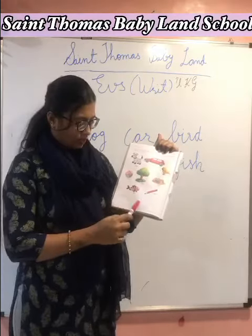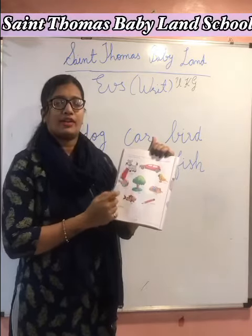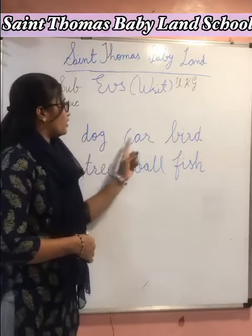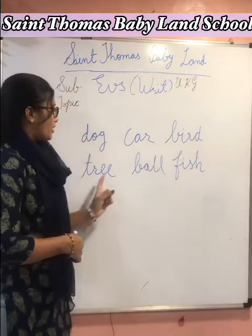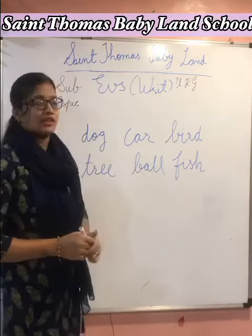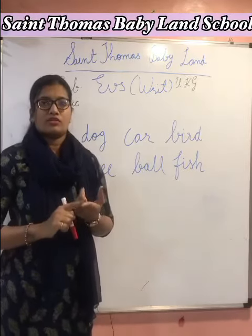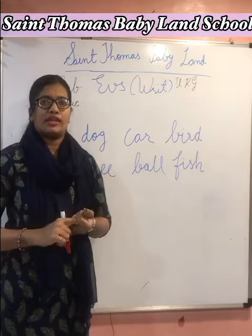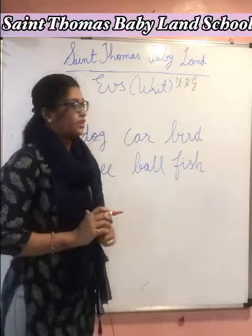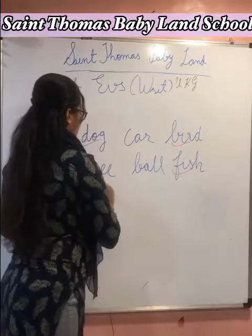Here we have four blanks. In this whole picture, we have to identify the living things. For example, here I wrote some names: dog, car, bird, tree, ball, and fish. So we have to identify the living things. Dog is a living thing — dog needs food, water, and air to live. So this is a living thing. Car is not a living thing. Bird is also a living thing. Fish also, and a tree also.